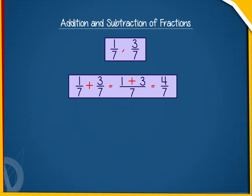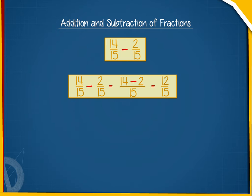This tells us that the sum of two or more like fractions is equal to the sum of numerators divided by common denominator. In the same way, we subtract two like fractions.